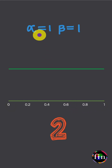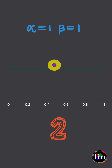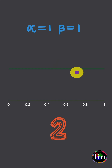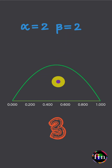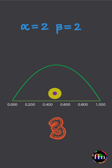If I set alpha and beta both to be equal to 1, my beta distribution simplifies to the standard uniform distribution. If I set alpha and beta both to be equal to 2, my beta distribution becomes this nice symmetric humped shape distribution.